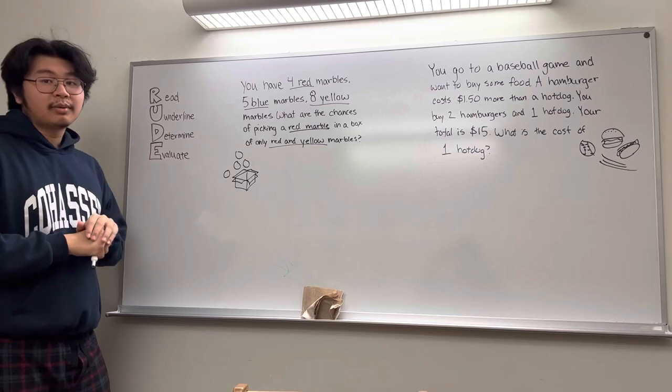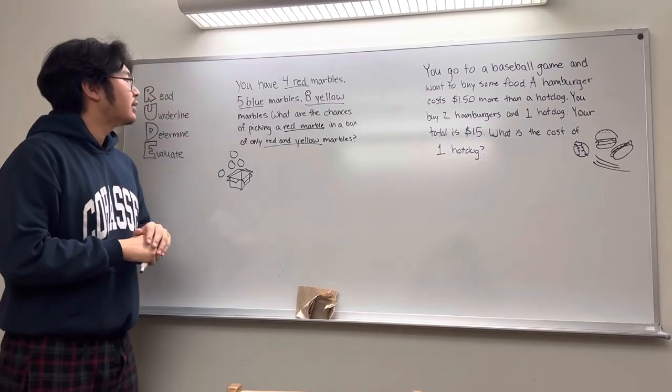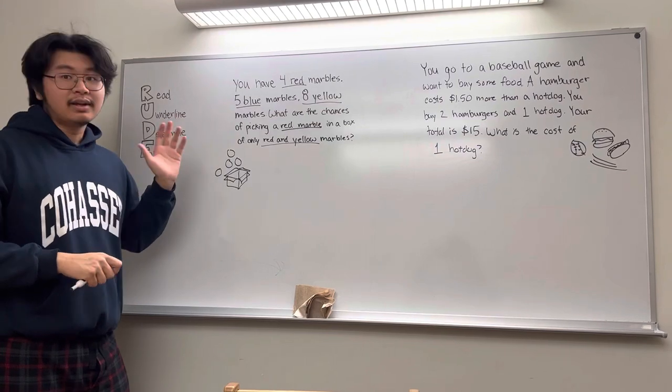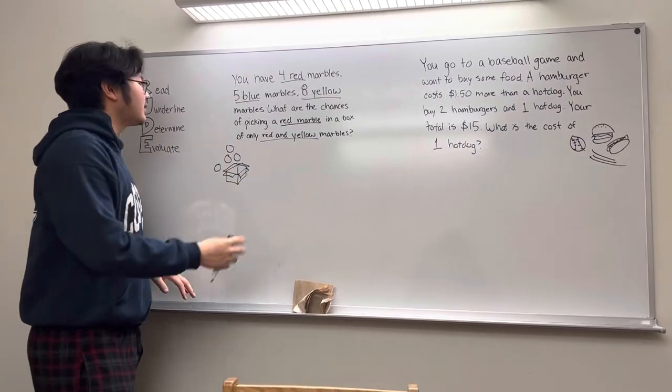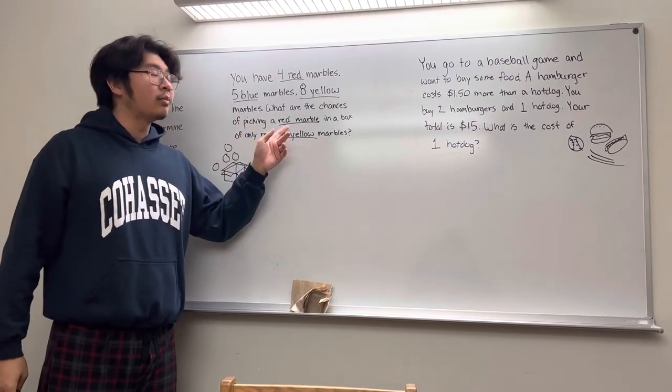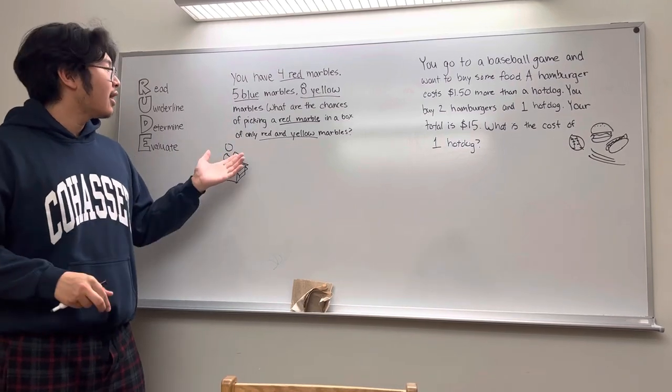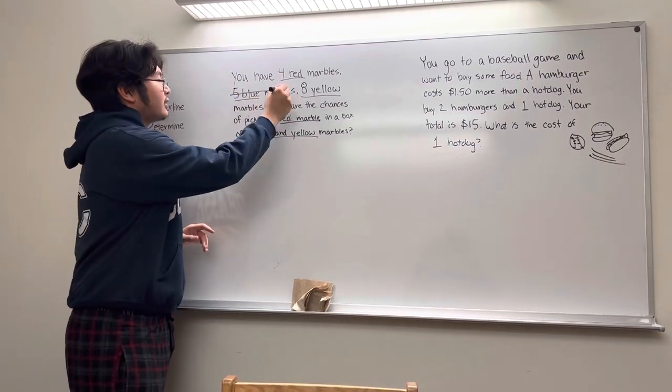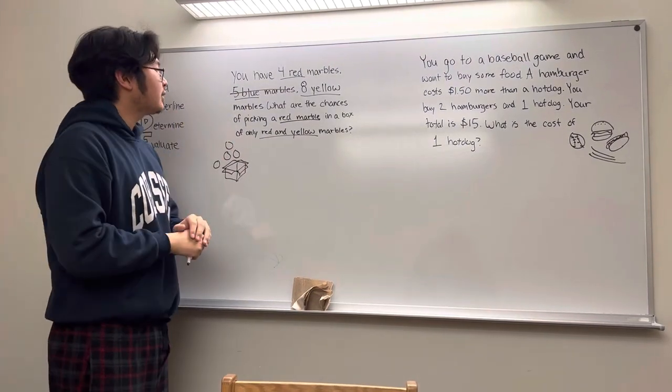let's go to D, determine. So, basically, now that we have the information, we're going to determine what parts of it is relevant and how we're going to use it to find an answer. So, as you can see in the question, we're being asked what are the chances of picking a red marble out of a box of only red and yellow. So, using that, we can cross out this information since the amount of blue marbles is not relevant.